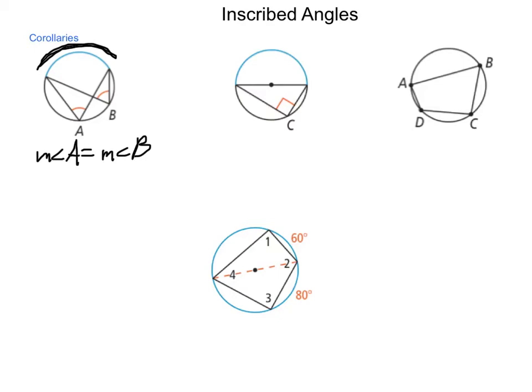Because angle D intercepts arc ABC, and then angle B would intercept arc ADC, because they intercept arcs that make up the full circle,